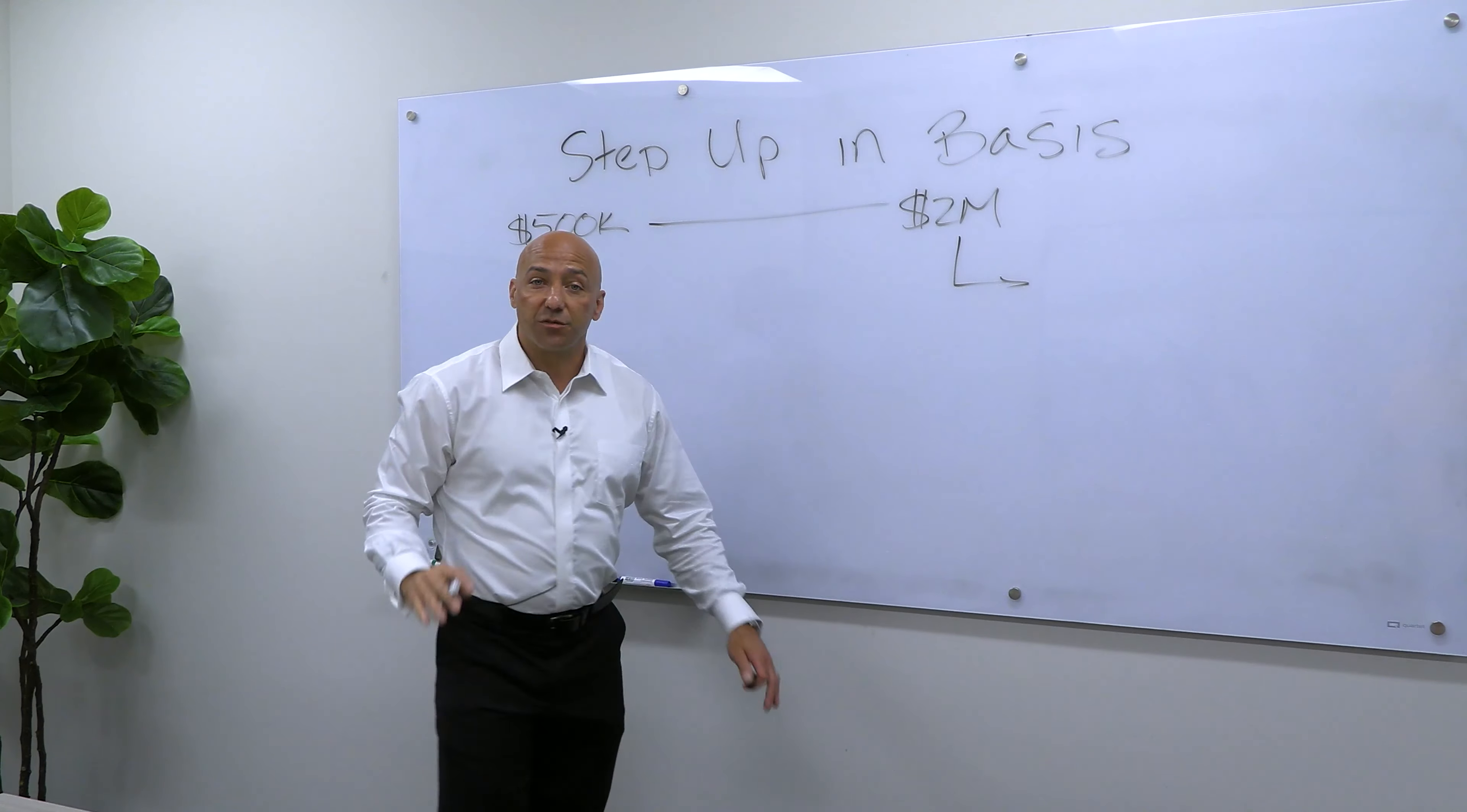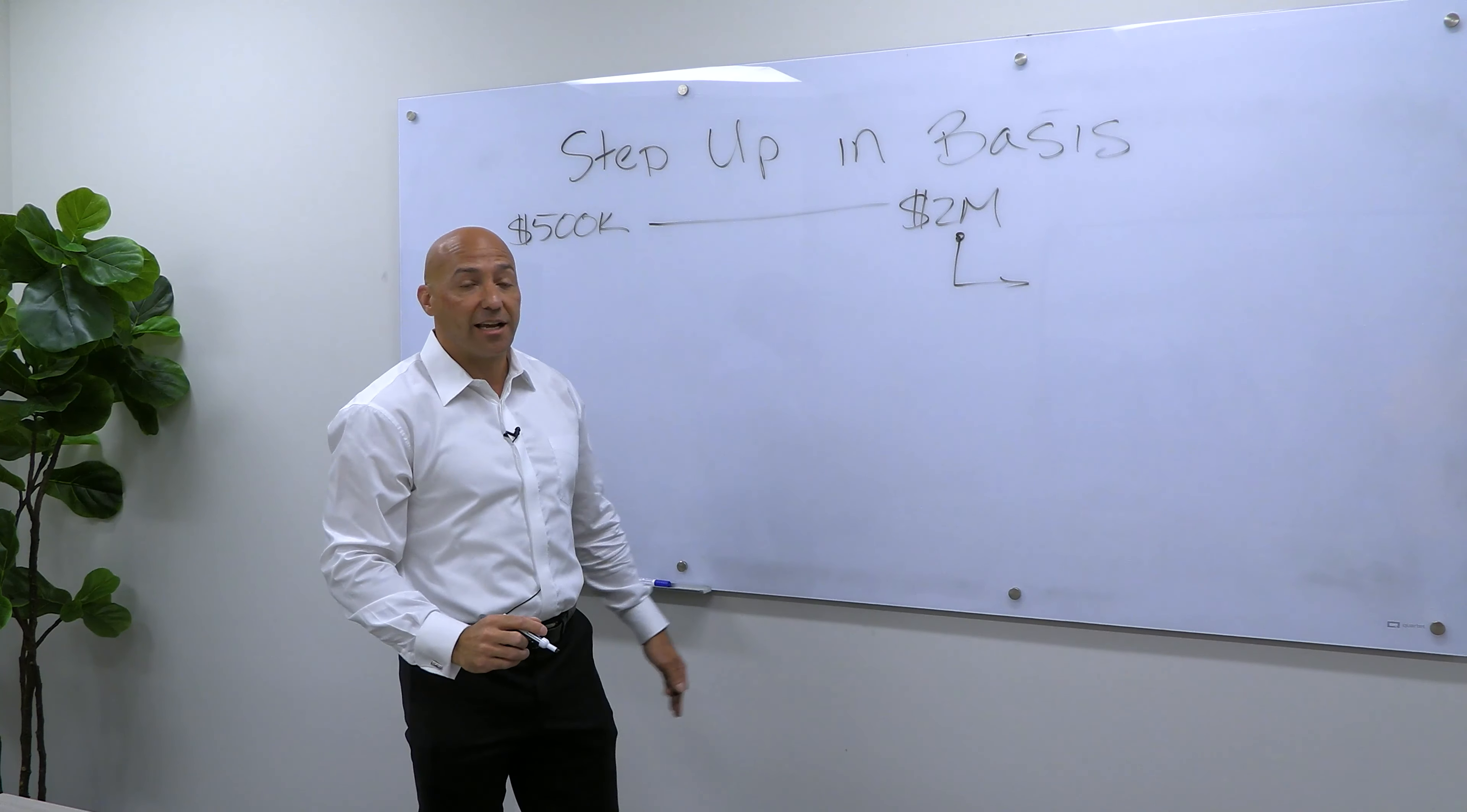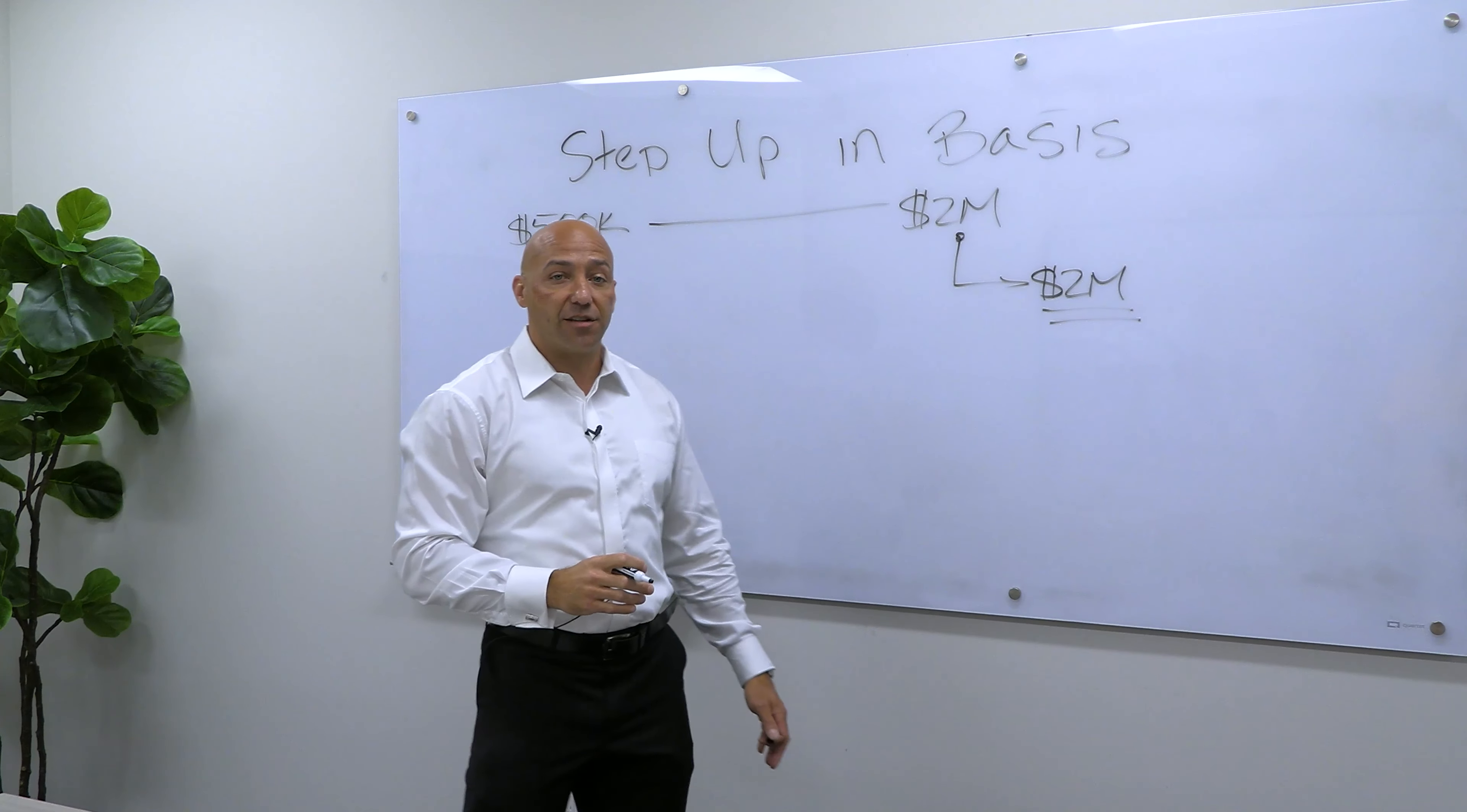And the way the step up in basis works currently is that at the day of my death, they reassess or step up the cost basis to the current value on the day that I die. So if it's worth $2 million the day that I die and then my kids immediately sell it for $2 million, they would owe zero in taxes.